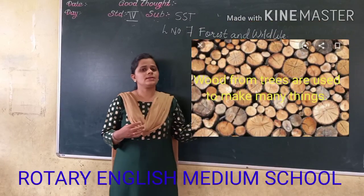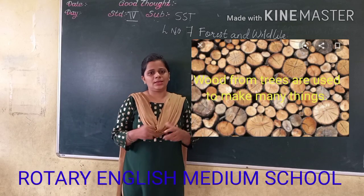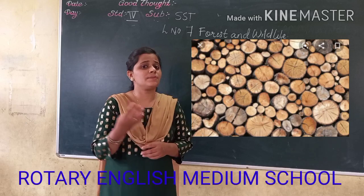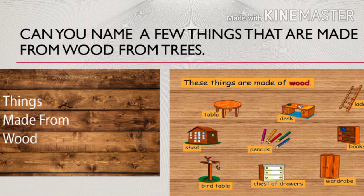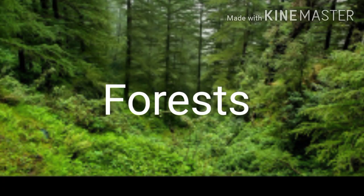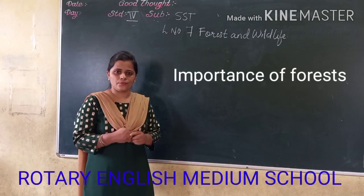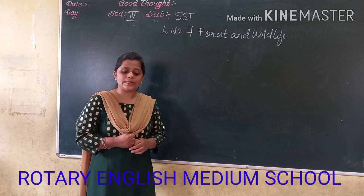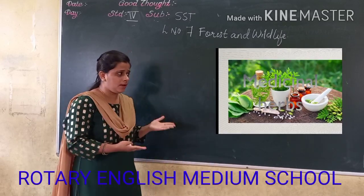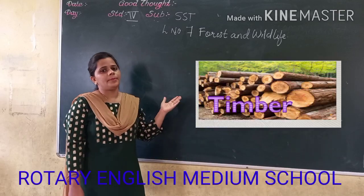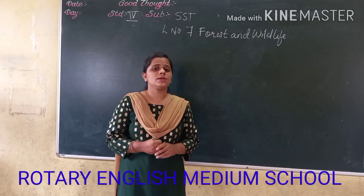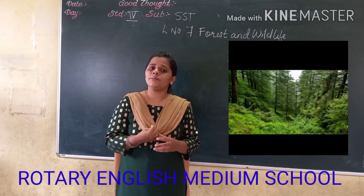Wood from trees is used to make many things. Can you name things which are made from wood? That is table, chair, wardrobe, dining table, cupboard, etc. This wood comes from the forest. We also get medicinal herbs, wood, fruit, timbers, gum and rubber from the forest. Forest is very important for us.